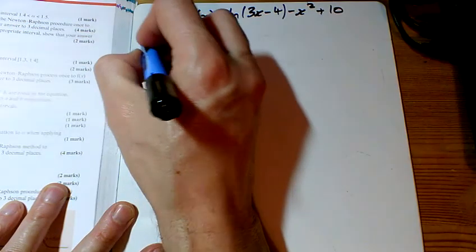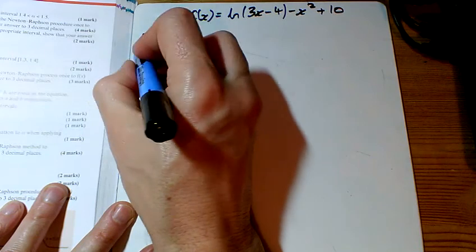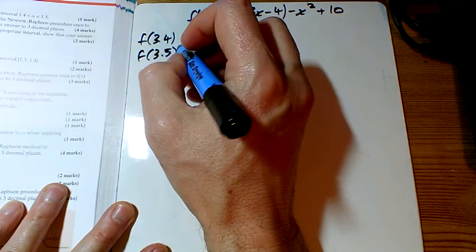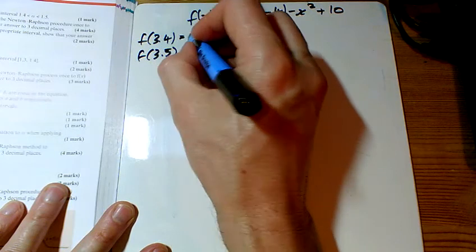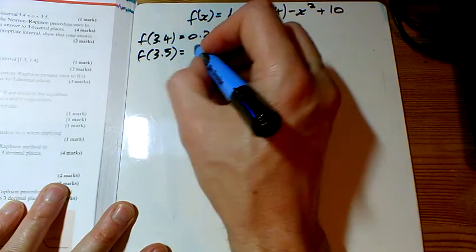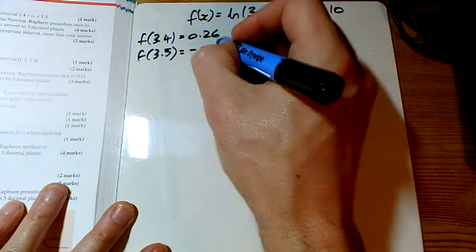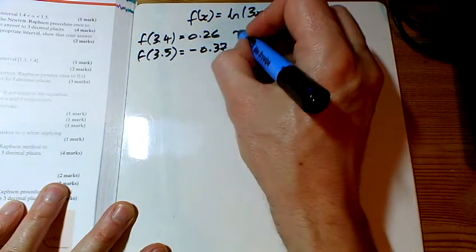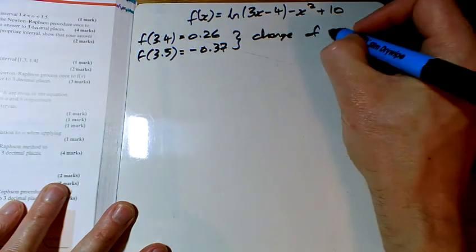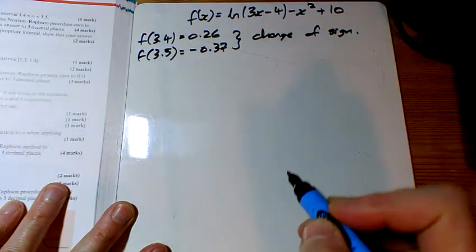Usual start, show that it's got a root between 3.4 and 3.5. I've got 3.4 to be 0.26 and 3.5 to be minus 0.37. Change of sign, therefore root between 3.4 and 3.5.